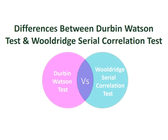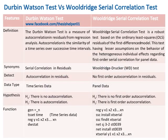Differences between the Durbin-Watson test and the Wooldridge Serial Correlation test. The Durbin-Watson test is a measure of autocorrelation in residuals from regression analysis. Autocorrelation is the similarity of a time series over successive time intervals. The Wooldridge Serial Correlation test is a robust test based on the Ordinary Least Squares residuals of the first-differenced model, having fewer assumptions on the behaviour of heterogeneous individual effects regarding first-order serial correlation for panel data.